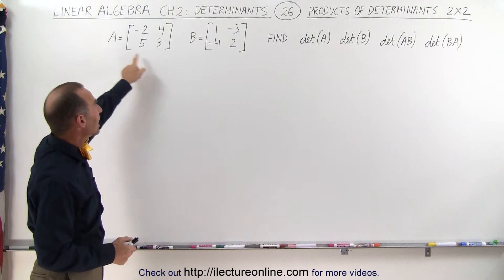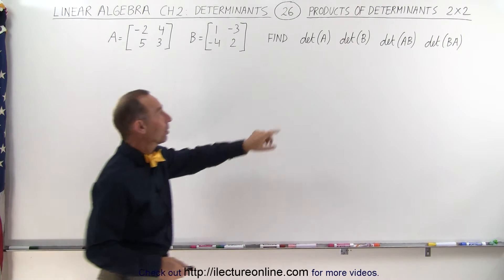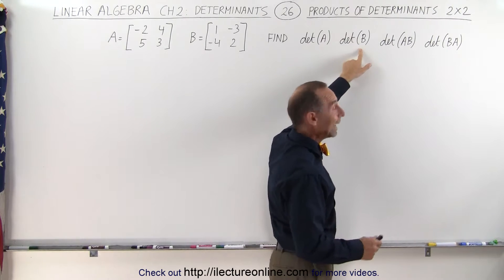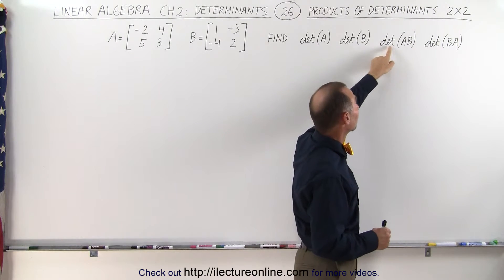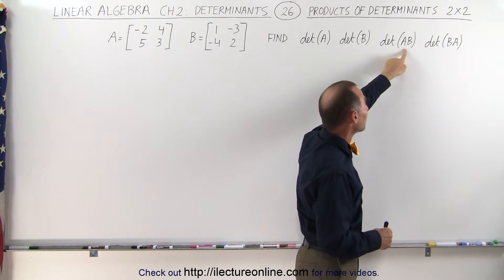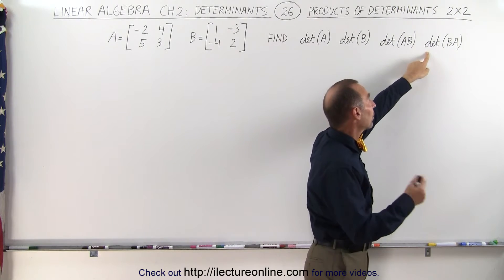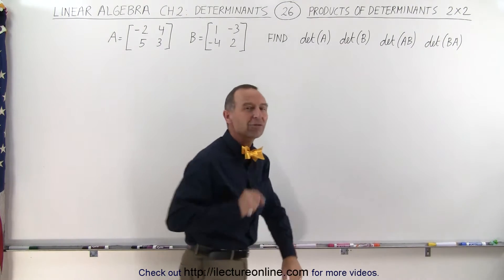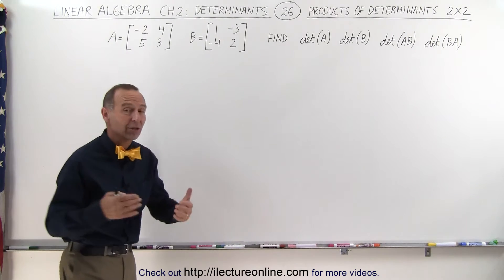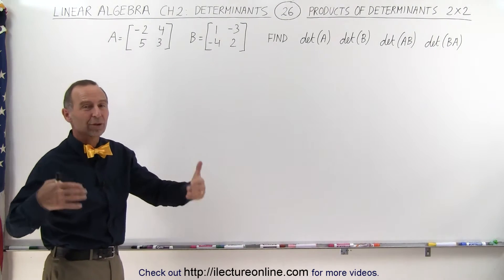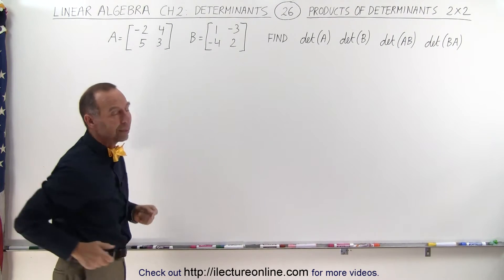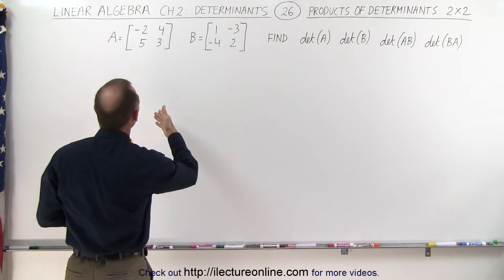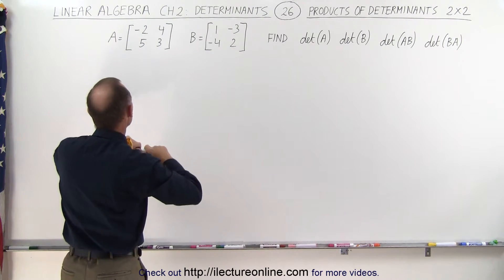We have two of them, A and B, and we're going to find the determinant of A, the determinant of B, the determinant of the product A times B, and the determinant of the product B times A. Some very interesting results will come, allowing us to draw general conclusions. So first, let's do the easy part and find the determinants of A and B.